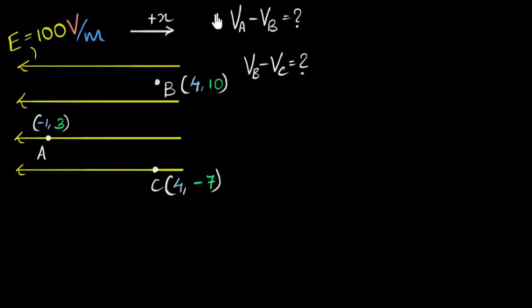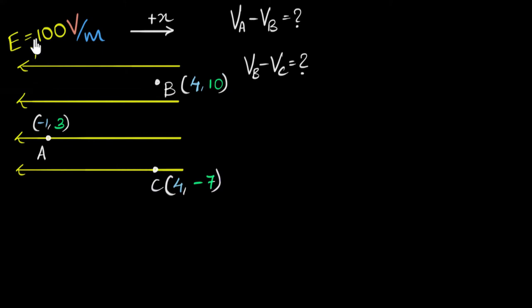Let's start solving the first one: what is the potential difference VA minus VB? One way is we can use the formula, but I want to try and solve this logically. This number — 100 volts per meter — means that if you move along the field, for every meter you go forward along the field, you will lose 100 volts of potential.